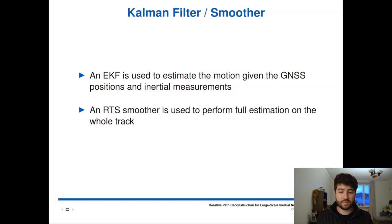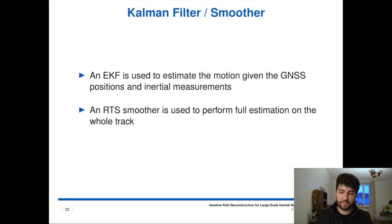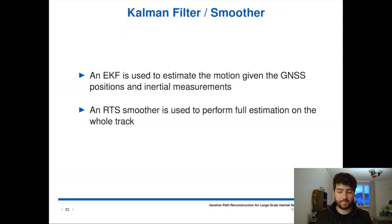In order to fix the track, we implement an RTS smoother. We perform the full estimation of all the states based on all the data, which means that when we reach the end of the gap, the information from the end of the gap gets put back into the track, and that makes the track look like a proper walking track.